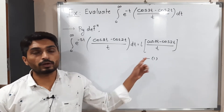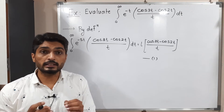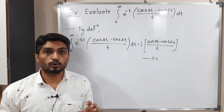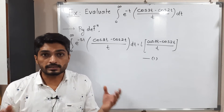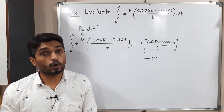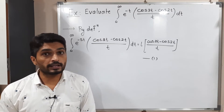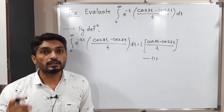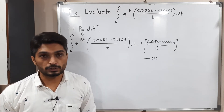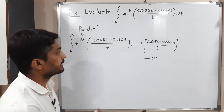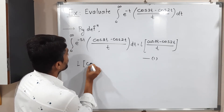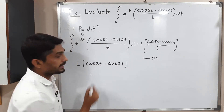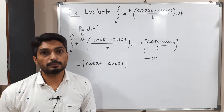Now the question is how to find its Laplace transform. The technique is straightforward. First I will consider the numerator, which is cos 3t minus cos 2t — we can take the Laplace of each term separately using the formula for L{cos(at)}. After that I will handle the 1/t using the method of division by t.